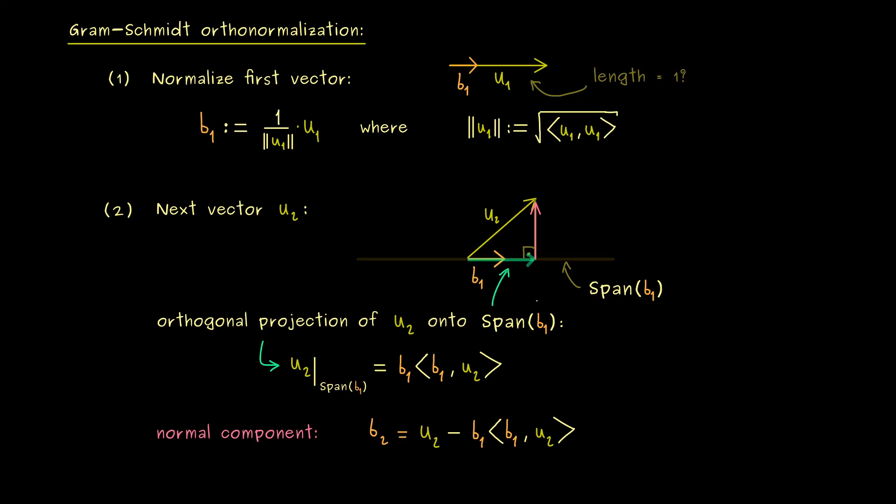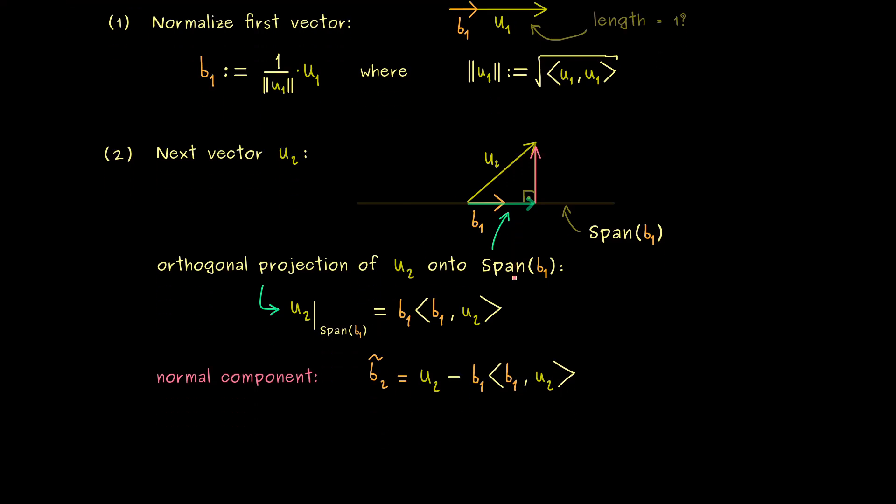And this is really simple, because it's just u2 minus the orthogonal projection. Hence our vector b2 we want to have is given by this difference here. Indeed, it's orthogonal to b1 by definition. However, let's first call it b2 tilde, because it's not normalized yet. Indeed, there is no reason here that the normal component has length 1. Therefore we just have to normalize it in the same way as before, which means we just scale by 1 divided by the norm. So there we have it. This is now our vector b2.